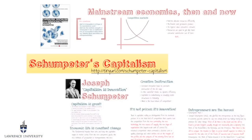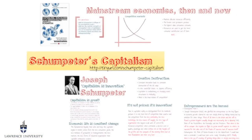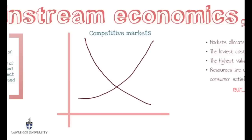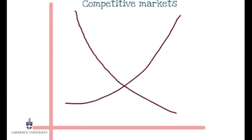Before we talk about Schumpeter's theories, let's talk about that mainstream theory which was mainstream back then and is mainstream today. What is the basic economic theory that you would study in an introductory economics course? It revolves around markets, and competitive markets in particular.